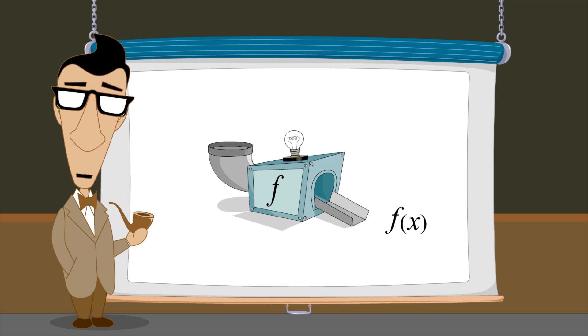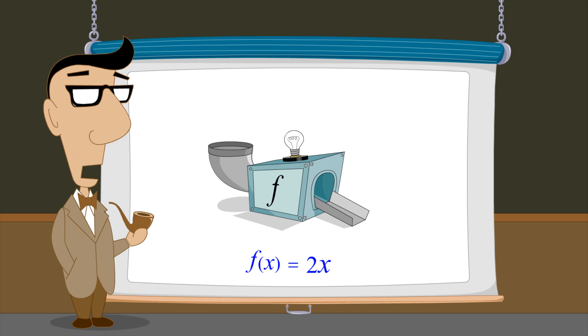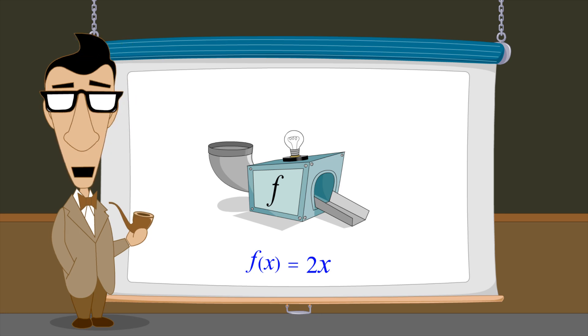In the function which we just discussed, the output f is always equal to 2 times the input x. Therefore, the statement f equals 2x is another way to describe the function f. This statement says that f is a function whose output value is always twice its input value.